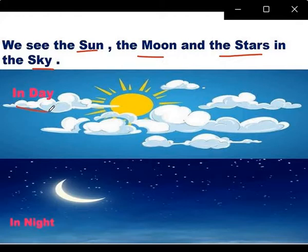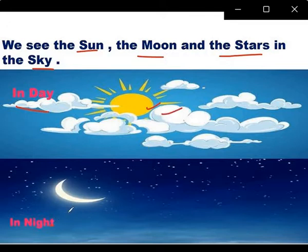In daytime, what do you see? Sun, clouds. Yes. In the sky during the day, we see sun and clouds. And in the night time, what do we see? Moon and stars. Moon and stars — in nighttime. Correct.